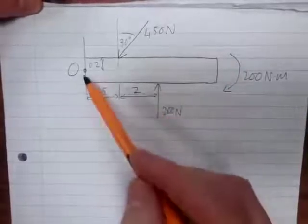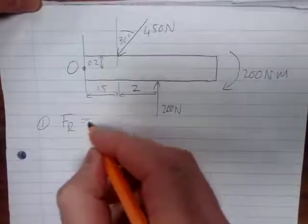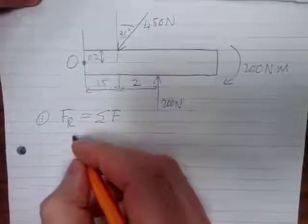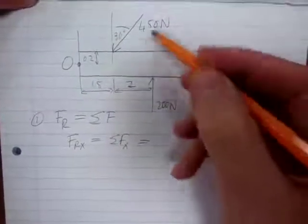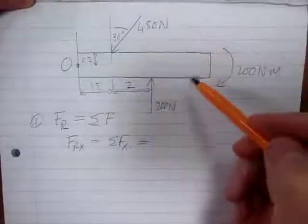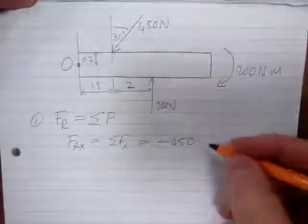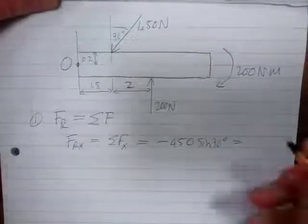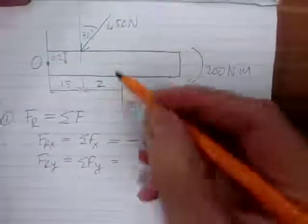The first step when we are trying to replace the system with an equivalent system is to calculate our resultant force, which is simply equal to the sum of all the forces. So what is our resultant force in the x? It is equal to the sum of all the forces in the x, which is simply the only x component I can see — and that is equal to minus 450 sine of 30, which equals minus 225 newtons.